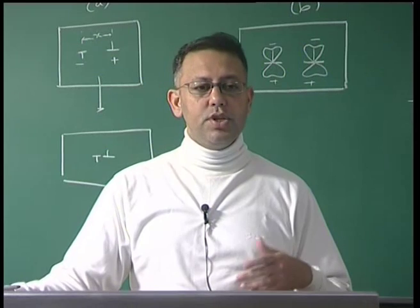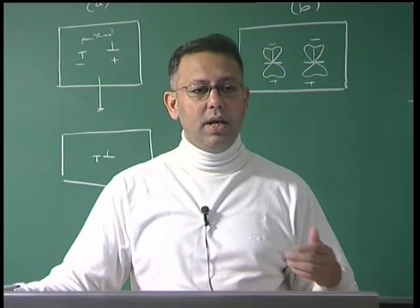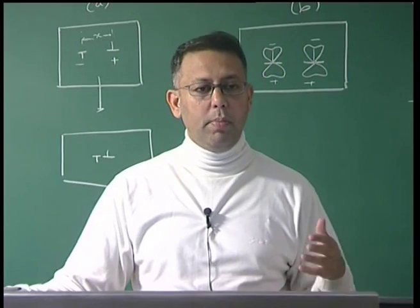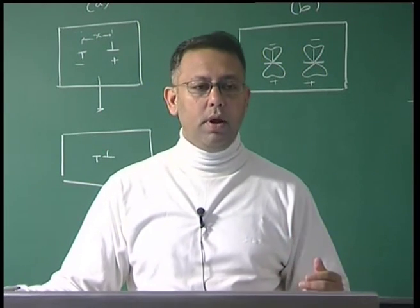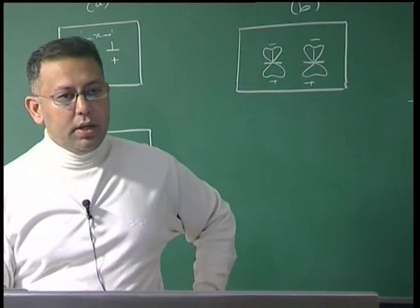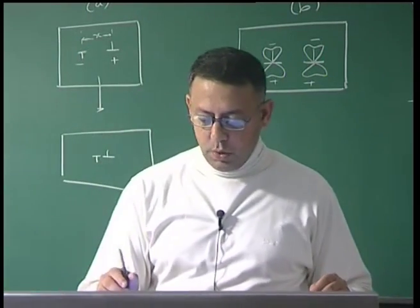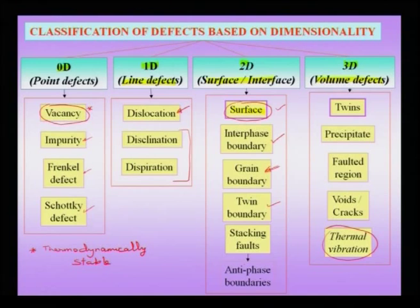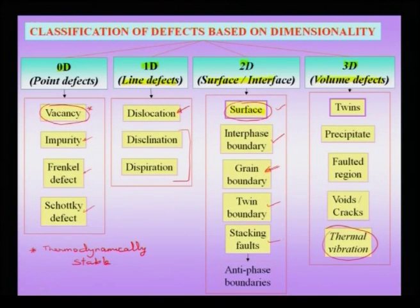Another kind of two-dimensional defect is the twin boundary. In close-packed crystals, there is a defect called a stacking fault, and a special kind of stacking fault is an antiphase boundary, found in ordered materials. Two-dimensional defects need not be flat — they could be curved with varying curvature from place to place.